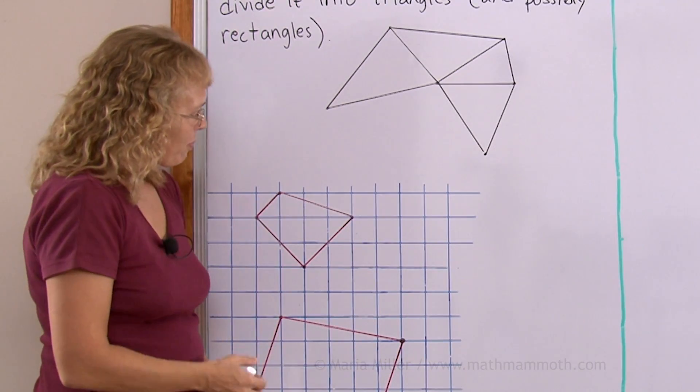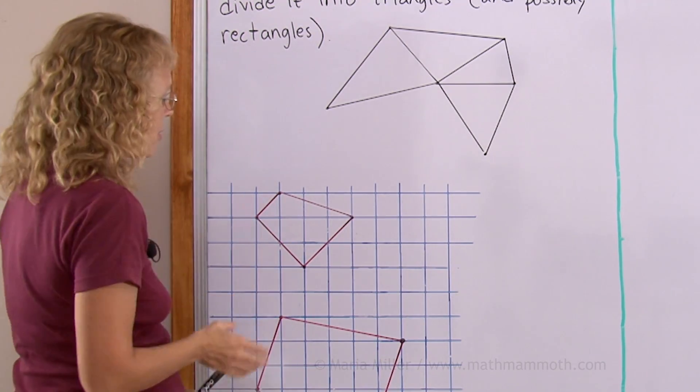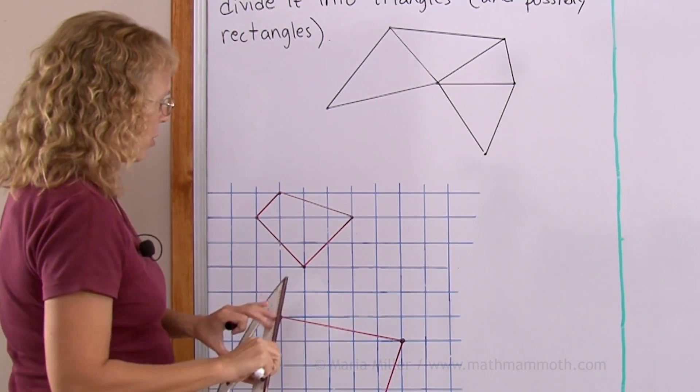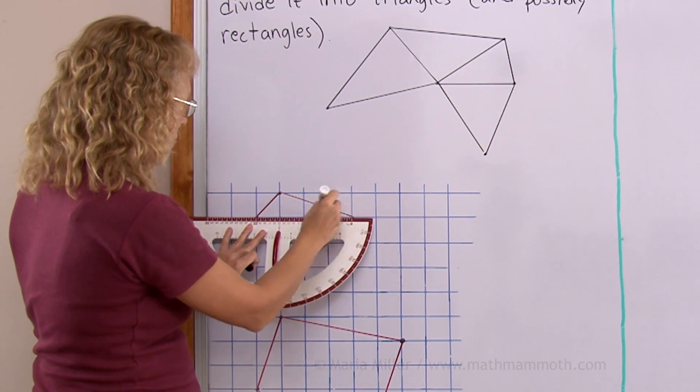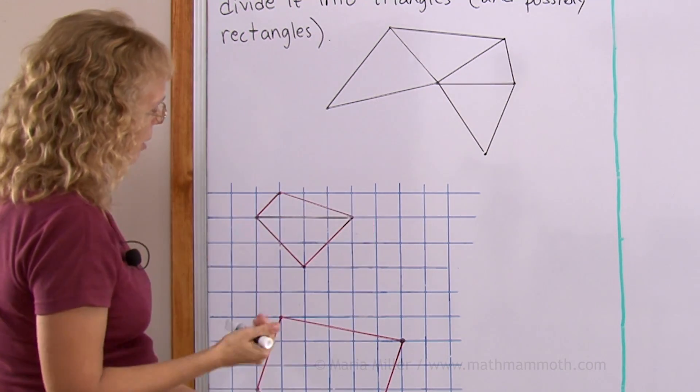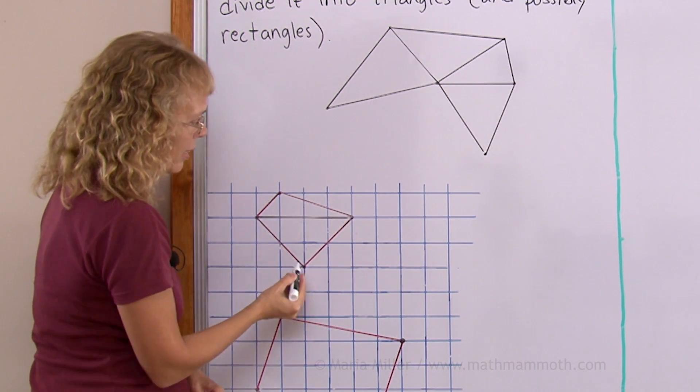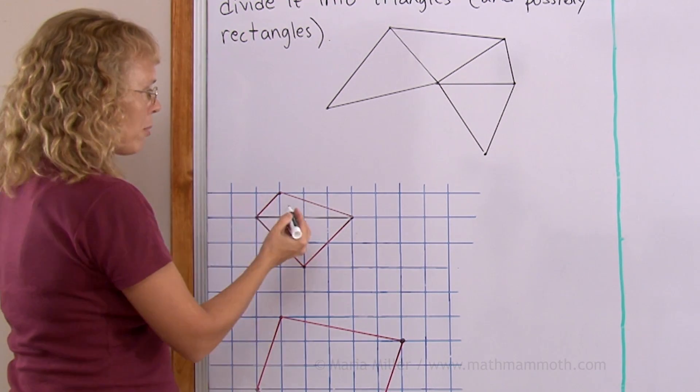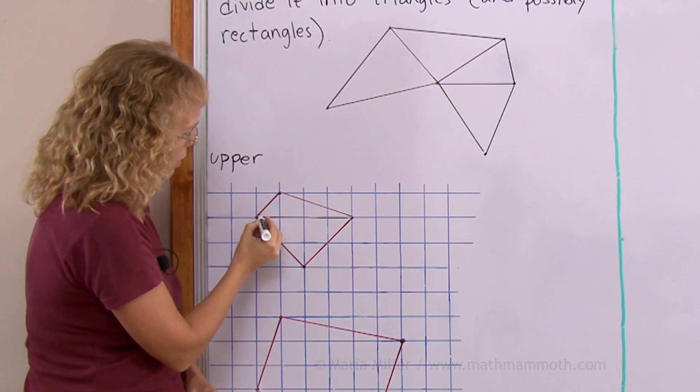For example here in the grid I'll first divide this into triangles and there's several ways you can do that. If I draw a line here then it becomes two triangles, the upper triangle and the lower one. For the upper one, we better write something down so we don't get confused.